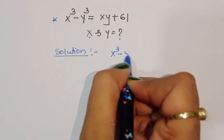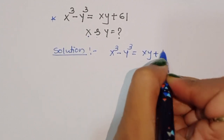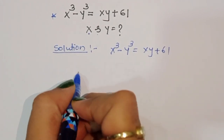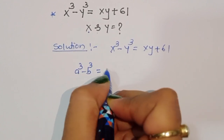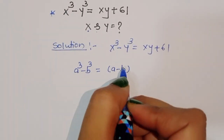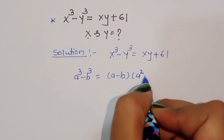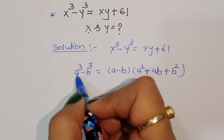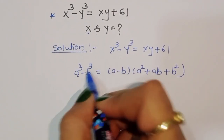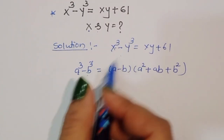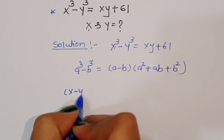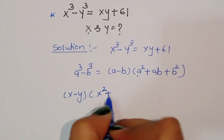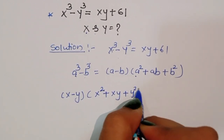x³ - y³ = xy + 61 is given. The formula of a³ - b³ is equal to (a - b)(a² + ab + b²). Using this formula, x³ - y³ can be written as (x - y)(x² + xy + y²).